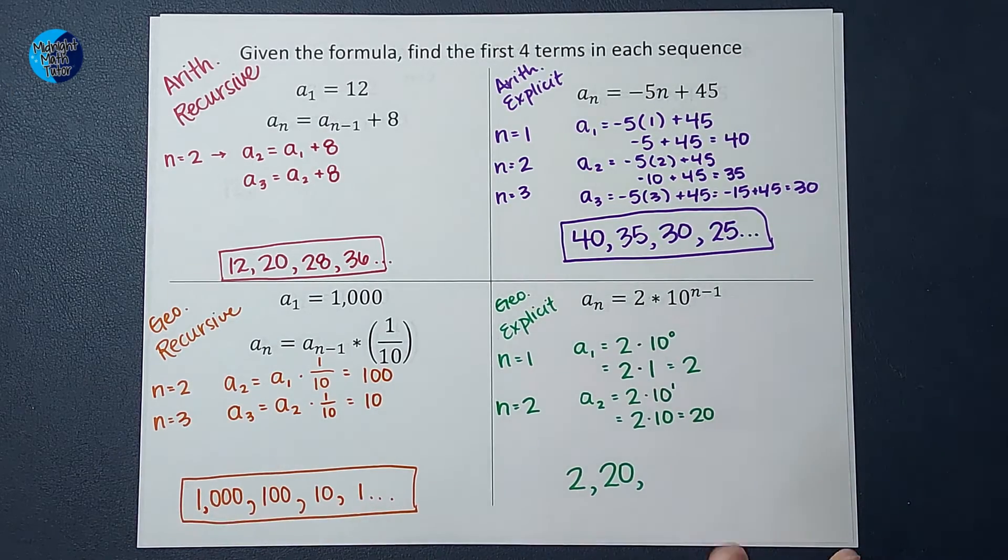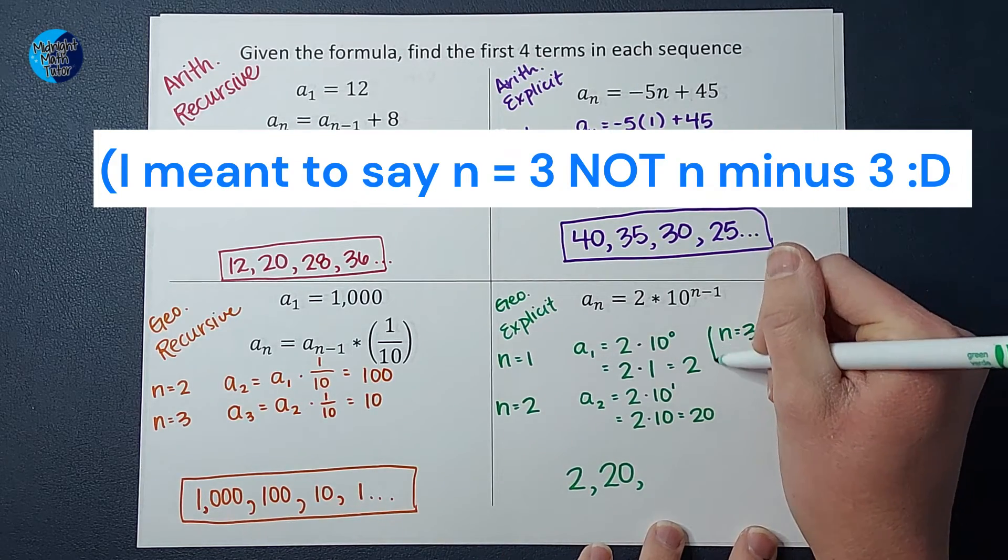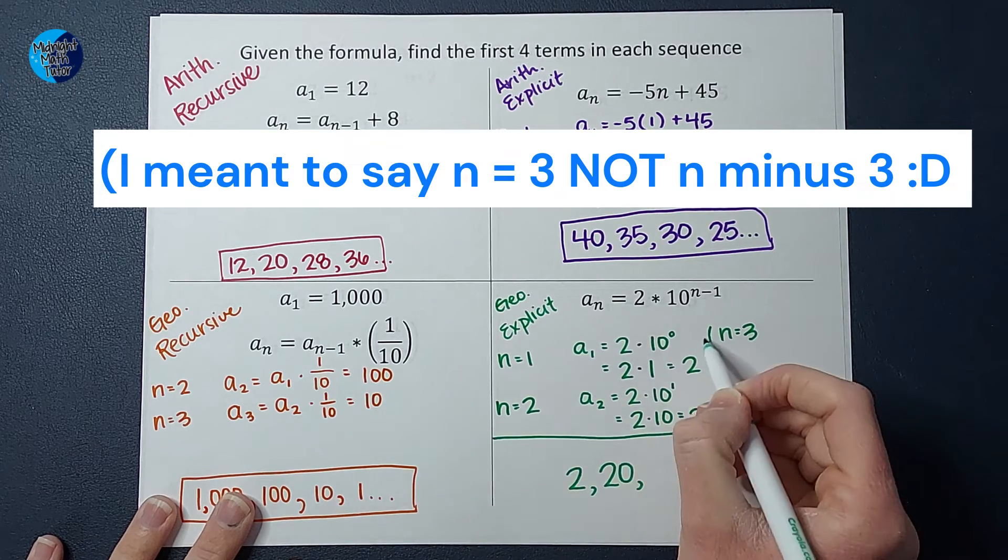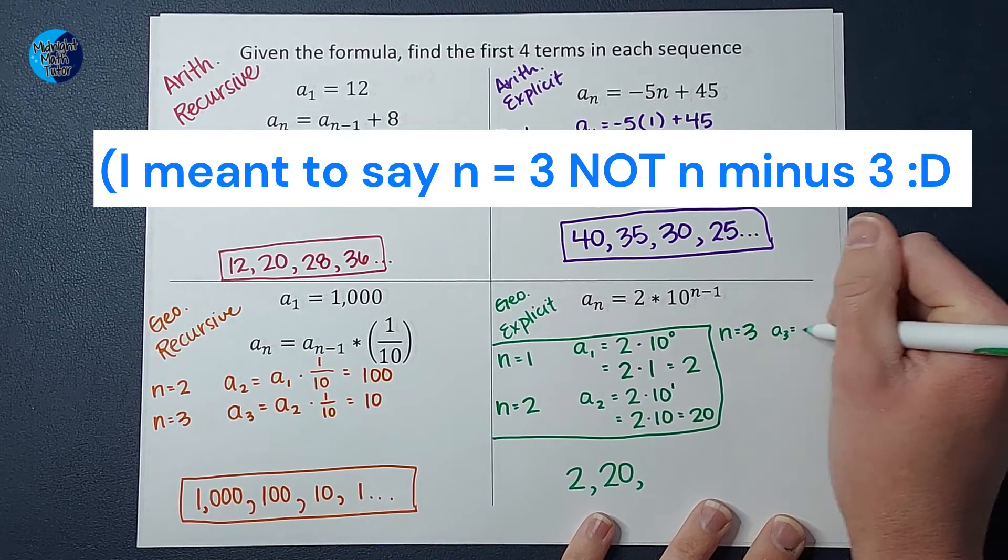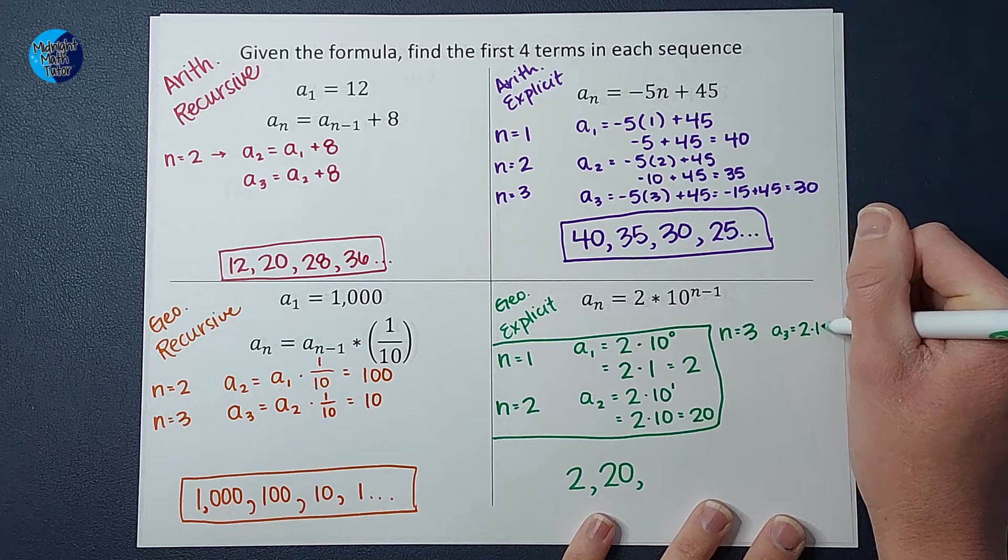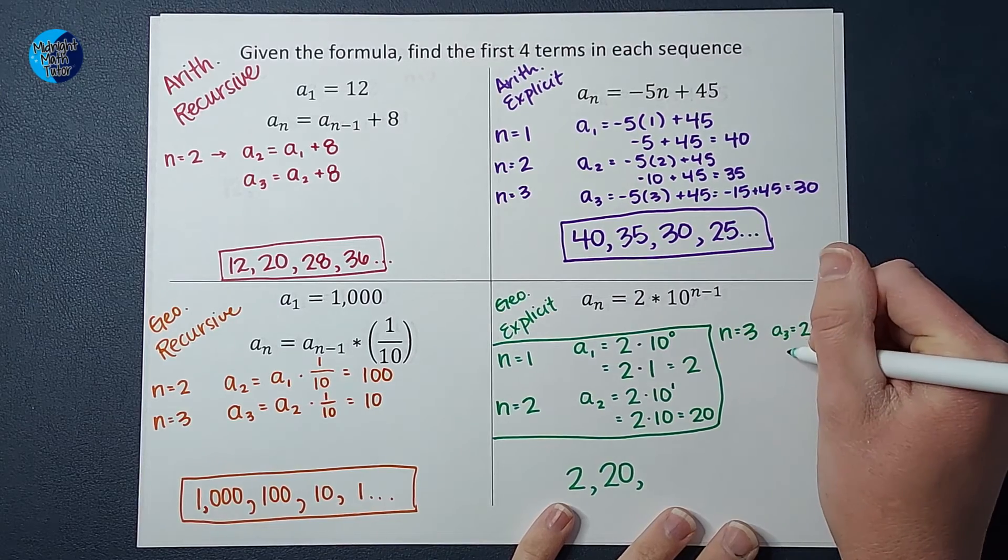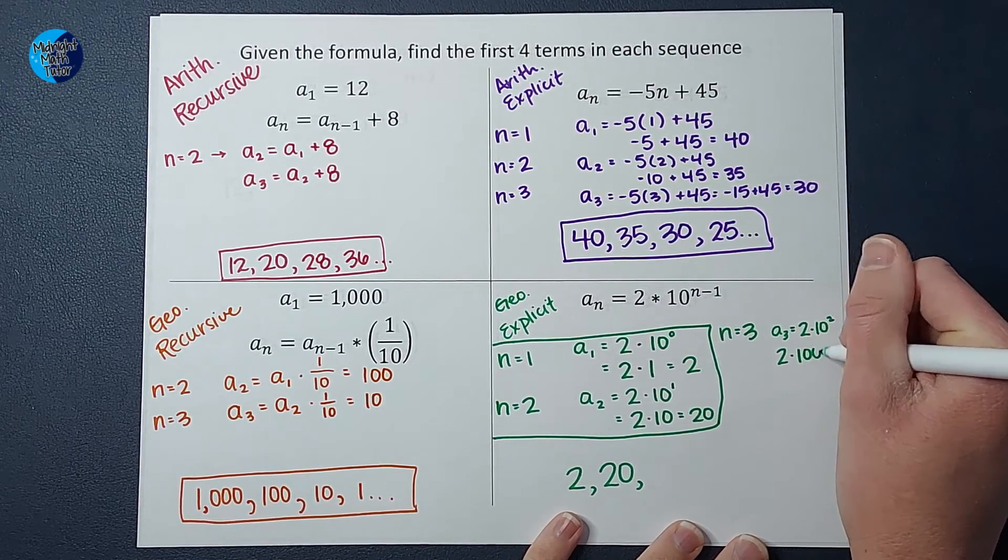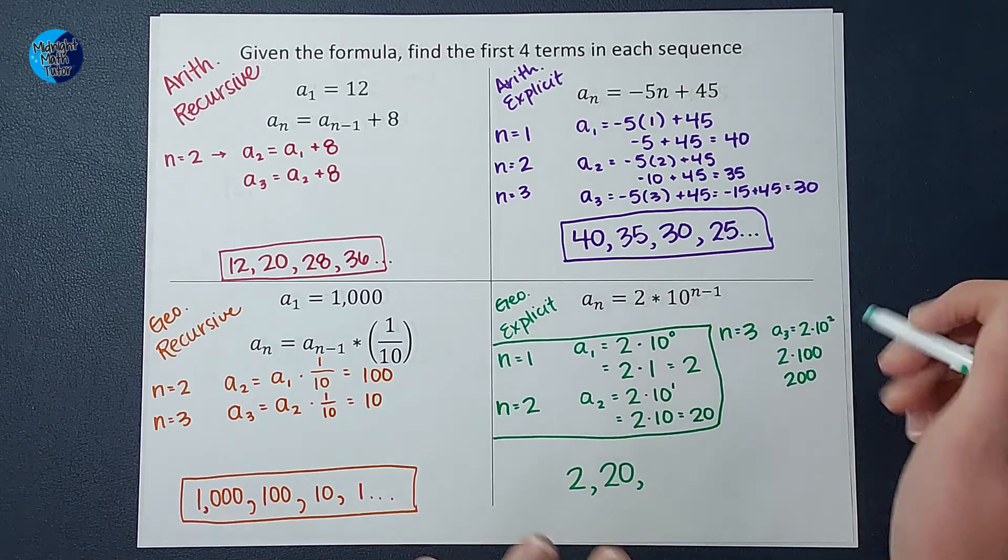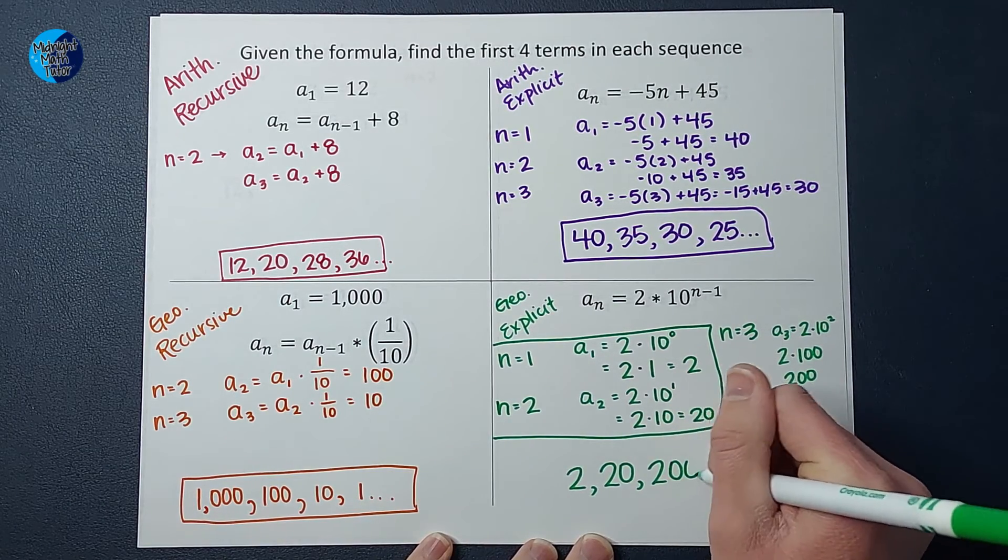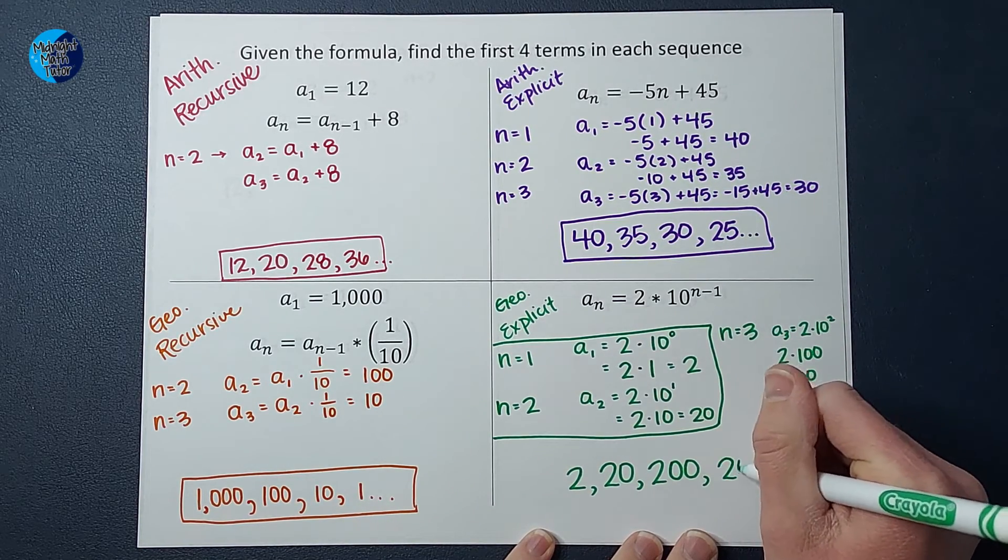Okay, awesome. Now you might have picked up on the pattern, but I am going to plug in n equals 3. So a sub 3 is equal to 2 times 10 to 3 minus 1, which would be 2. So then I have 2 times 10 squared is 100. So 2 times 100 gives me 200. So a sub 3, the third number in my sequence, is 200. So what are we doing each time? They're multiplying by 10, meaning my next number would be 2,000.